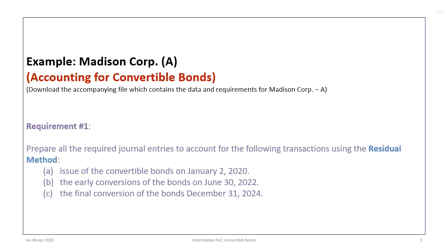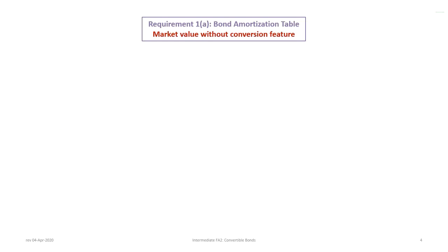We will start with requirement one, which is to prepare all the required journal entries to account for the transactions under the residual method. We're going to record the issue of the bonds on January 2nd, 2020, the early conversion of the bonds on June 30th, 2022, and the final conversion of the bonds on December 31st, 2024. The first thing we're going to do is calculate the present value of the bond and show what the bond amortization table looks like.